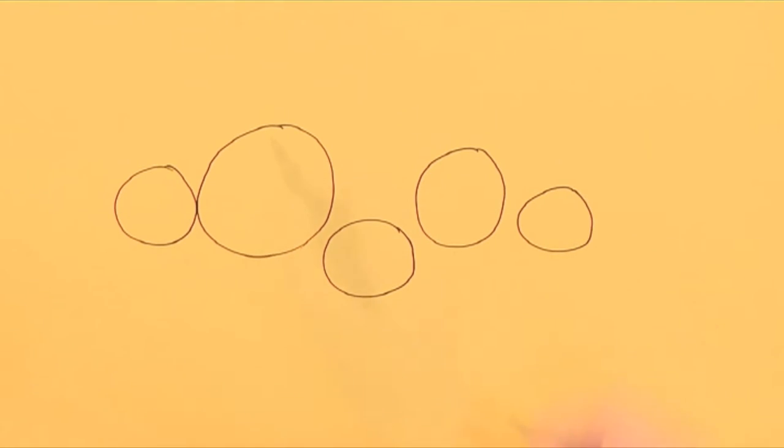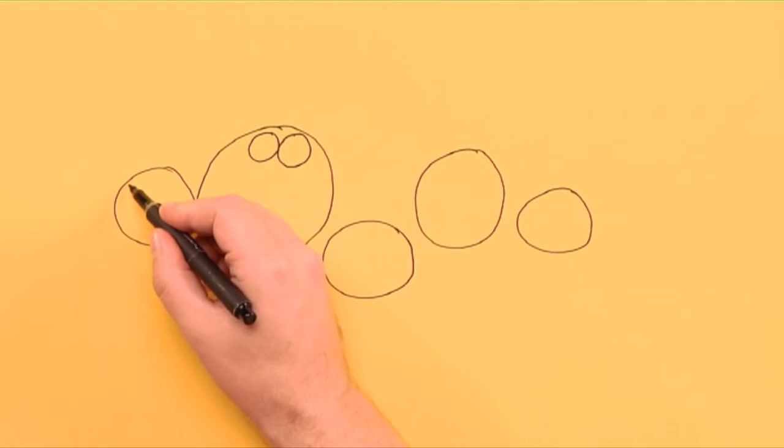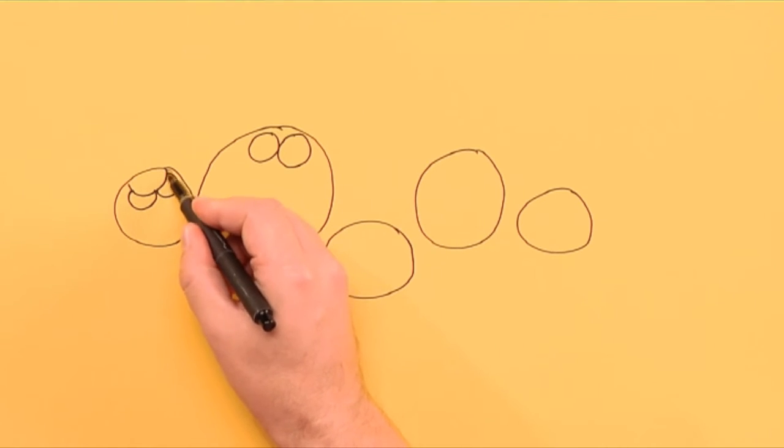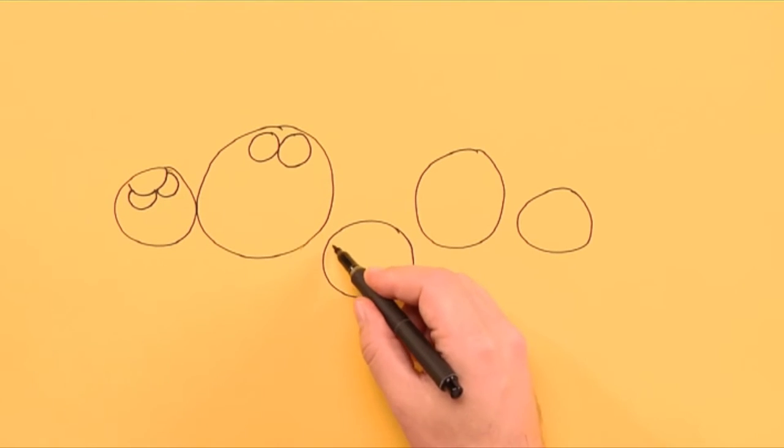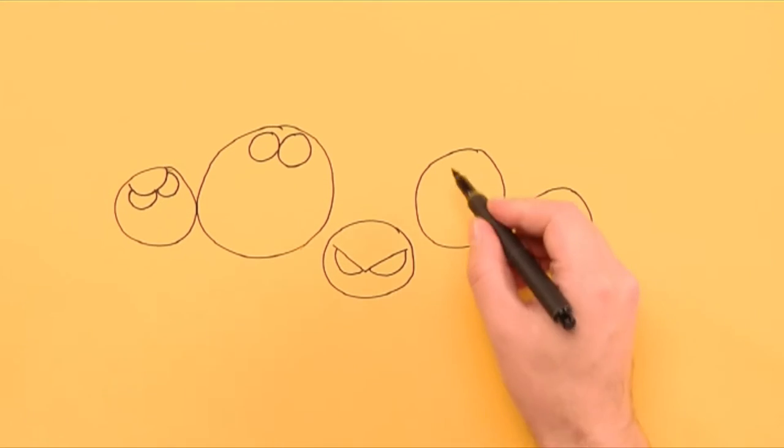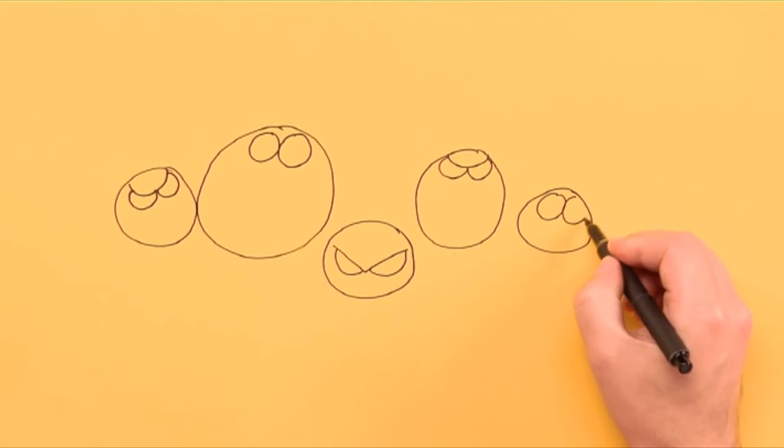Then I draw eyes on all of them. Some are round and open. Some are u-shaped or v-shaped eyebrows. Then we have some angry eyes.